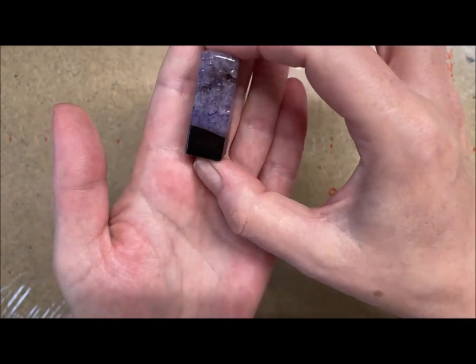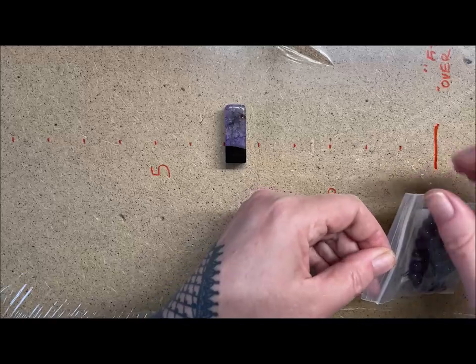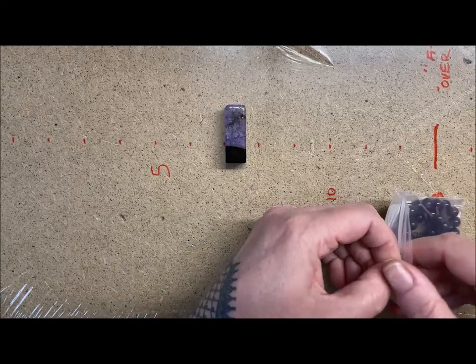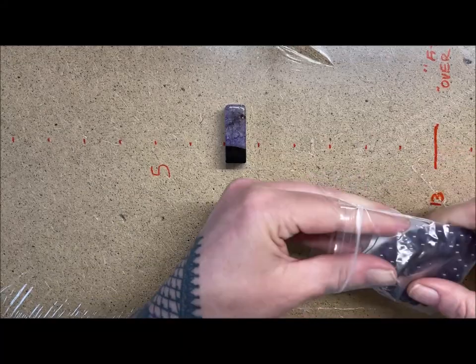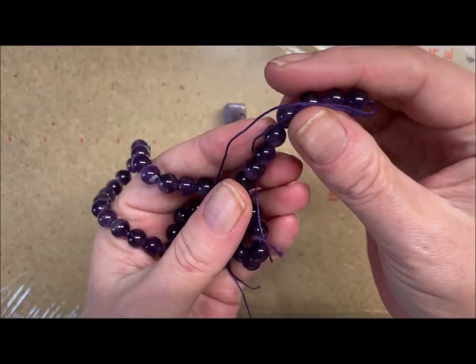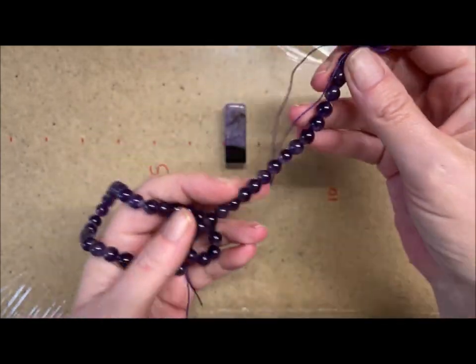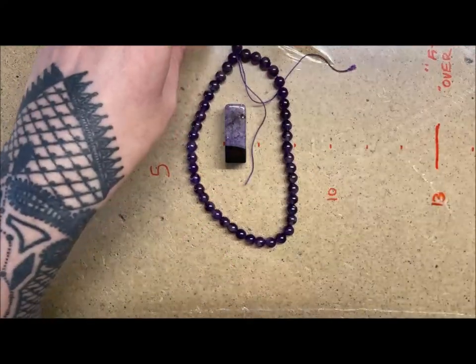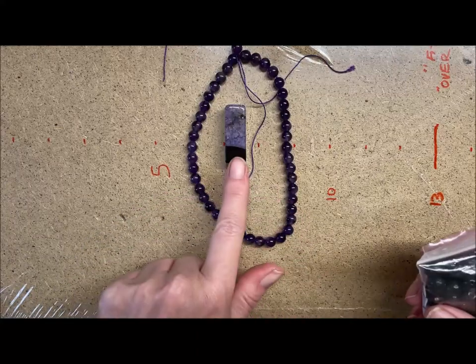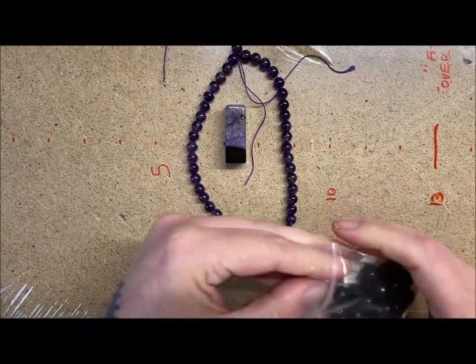Alongside that I'm going to be using some amethyst beads. They're not all purple, there's a little bit of flecking and crackling in them if you can make that out. And I've also got, because this is so dark, I wanted to offset that, so I've got some faceted black